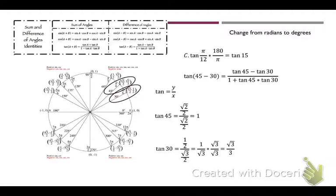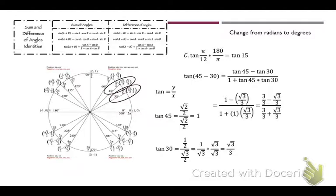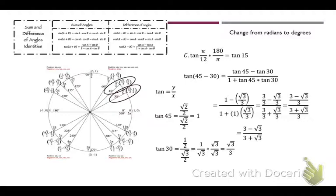Now plug those in: that's 1 minus √3/3 over 1 plus 1 times √3/3. This is the tricky part — we just have to simplify. Get a common denominator by multiplying the 1 on top and bottom by 3/3, giving 3/3 minus √3/3 over 3/3 plus √3/3. Change that into one fraction: (3 − √3)/3 divided by (3 + √3)/3. Those 3's cancel, leaving (3 − √3) over (3 + √3).